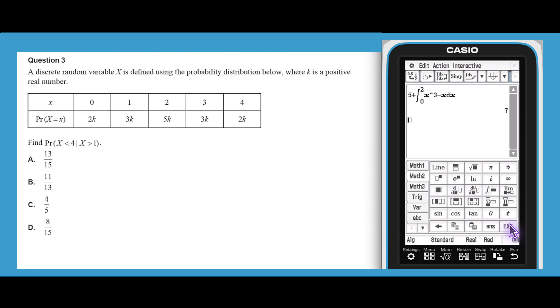Question 3 provides us with tabular information about a discrete random variable x with probabilities expressed in terms of k. Whilst we could start off by calculating the value of k relatively easily, this question really does not require it.